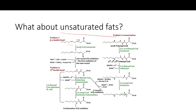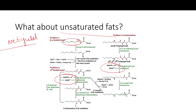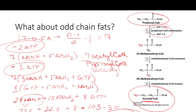What about unsaturated fatty acids with double bonds? The truth is that while we do use energetic molecules to reduce those double bonds, we use NADPH — not NADH or FADH2. So the net yield of ATP doesn't change based on saturation. The only factor that impacts net ATP yield from fatty acid oxidation is whether it's an even-chain or an odd-chain fat.